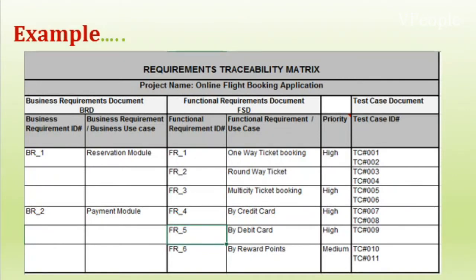Now let us see RTM in a real-time scenario for an online flight booking application. The business requirements taken here are the reservation module and the payment module. These are split into technical requirements: for the reservation module — one-way ticket, two-way ticket, and multi-city booking; for the payment module — by credit, by debit, and by reward points. These requirements are then mapped to test cases: for the reservation module, test cases one through six are mapped; for the payment module, test cases seven through eleven are mapped. They are also categorized by priority.